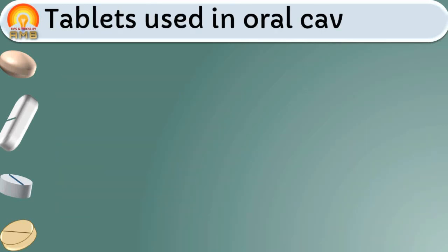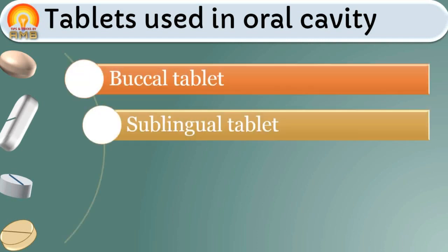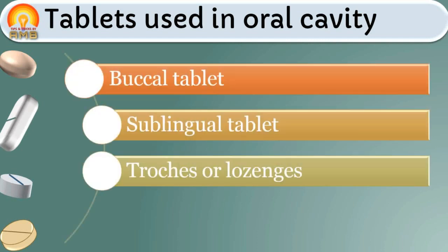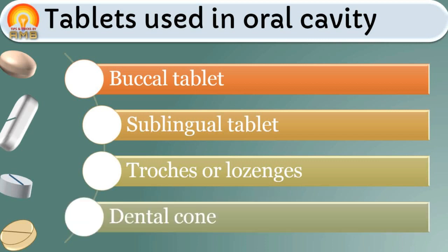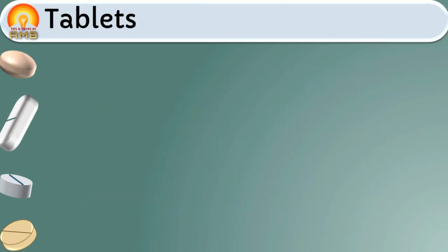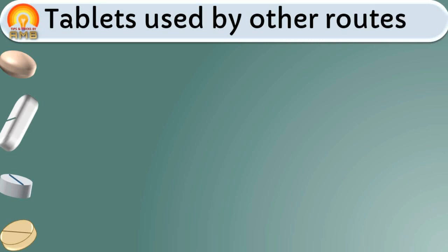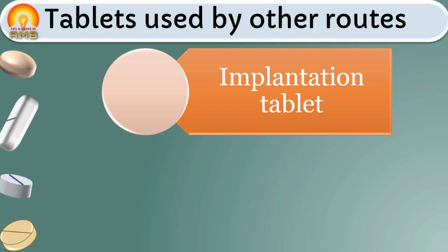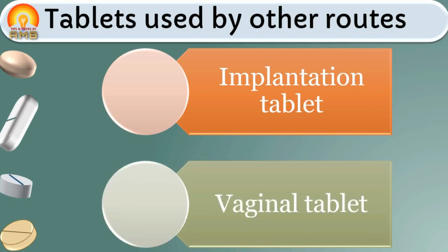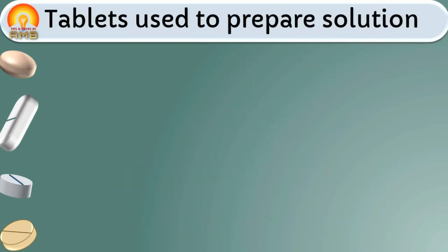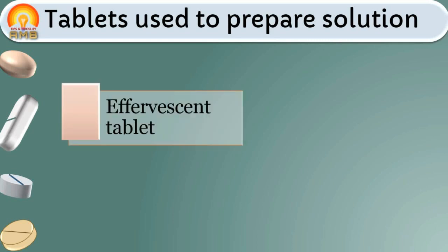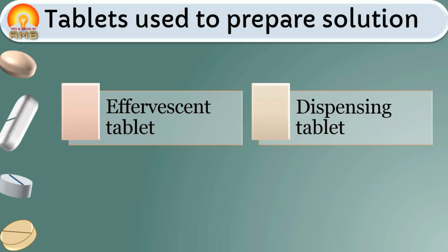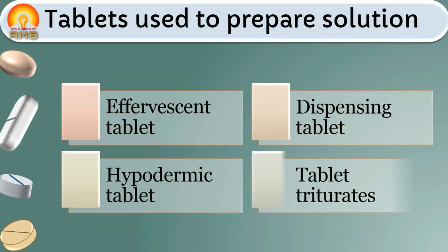Tablets used in oral cavity are further subtypes as buccal tablet, sublingual tablet, troches or lozenges, and dental cones. Tablets used by other routes are further subtypes as implantation tablet and vaginal tablets. Tablets used to prepare solution are further subtypes as effervescent tablet, dispensing tablet, hypodermic tablet, and tablet triturates.